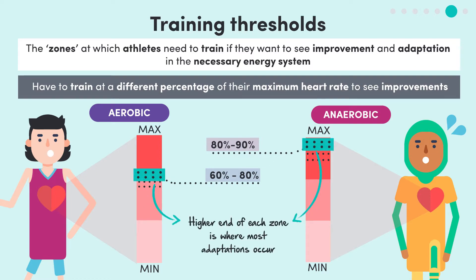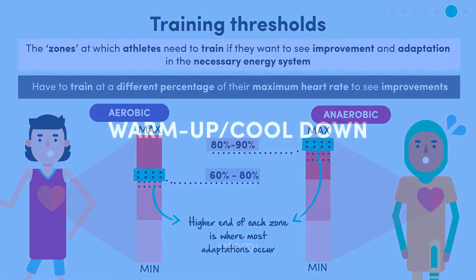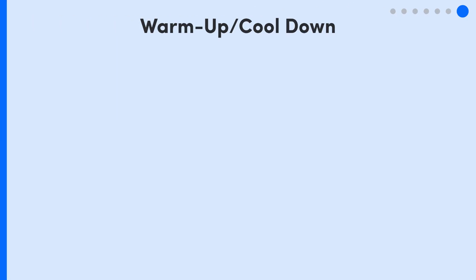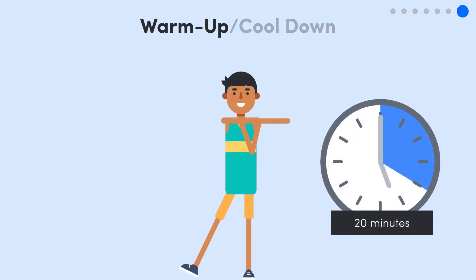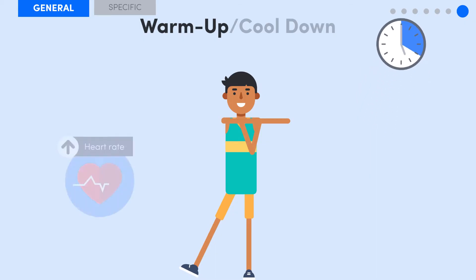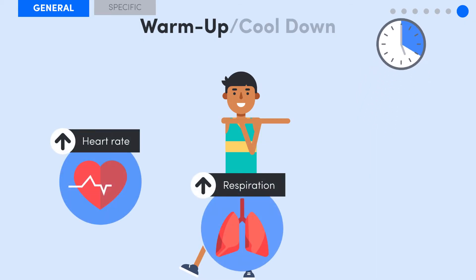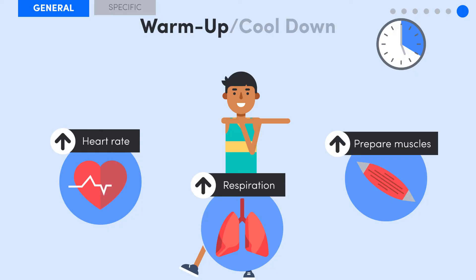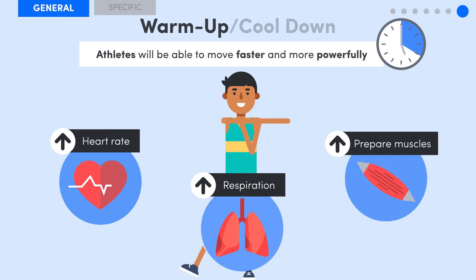The final principle is the warm-up and cool-down. The warm-up happens for about 20 minutes at the beginning of each session and has two key phases. The first is general warm-up, where athletes generally increase the heart rate, respiration rate, and prepare the muscles for the anticipated demands of the session ahead. Doing this means athletes will be able to move faster and more powerfully, getting the most out of their sessions.